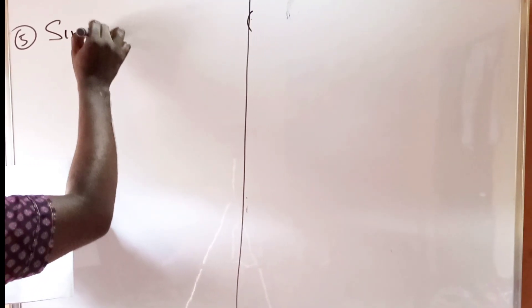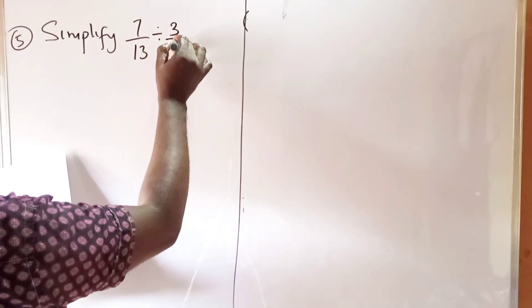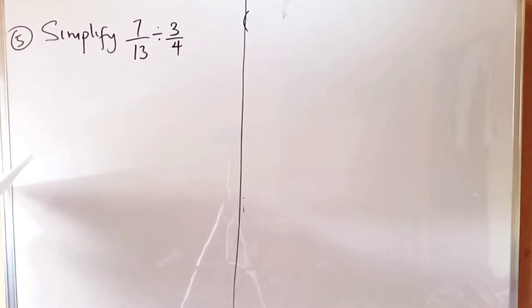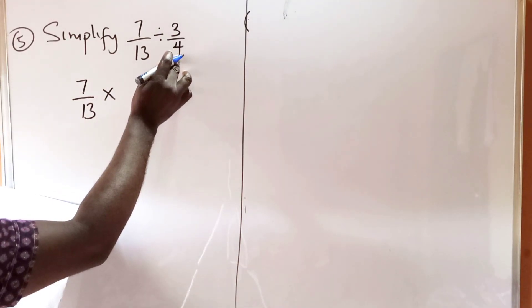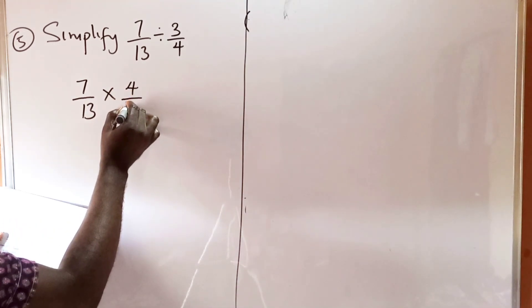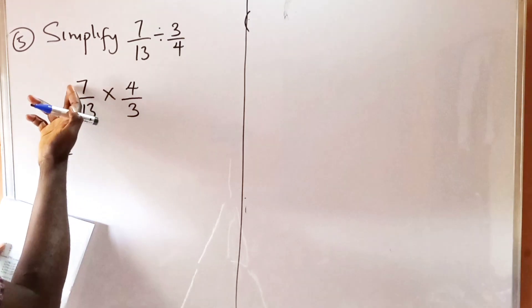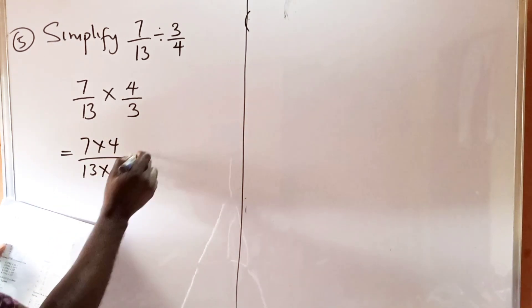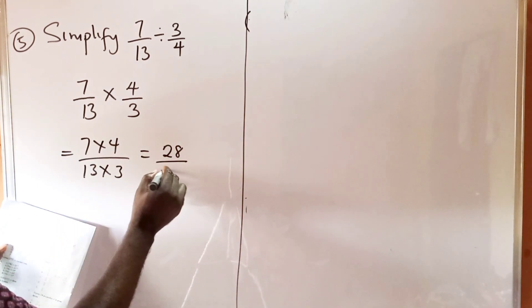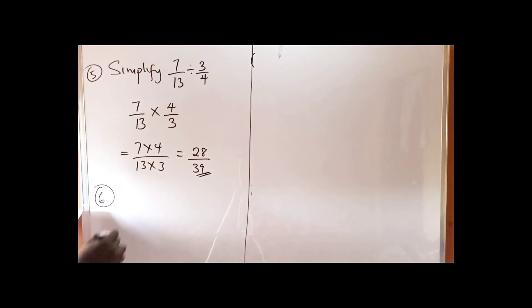Question number five asks us to simplify 7 divided by 13, divided by 3 over 4. This is division of fractions. We change the division to multiplication and flip the second fraction, so denominator becomes numerator and numerator becomes denominator. We get 7 times 4 over 13 times 3, which gives 28 divided by 39. That is the answer — option B.